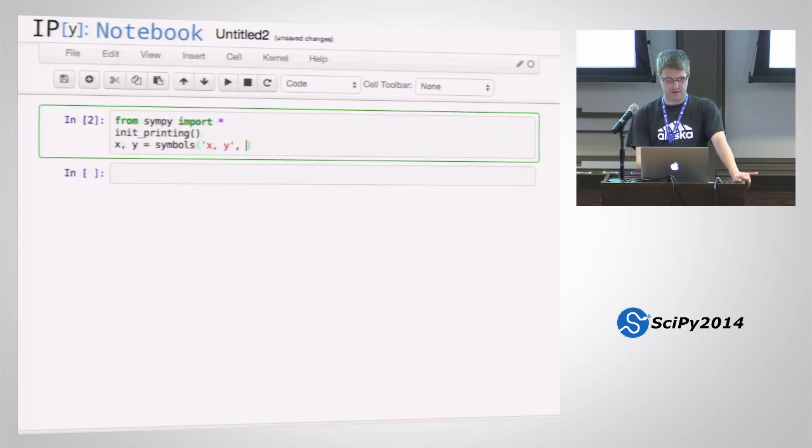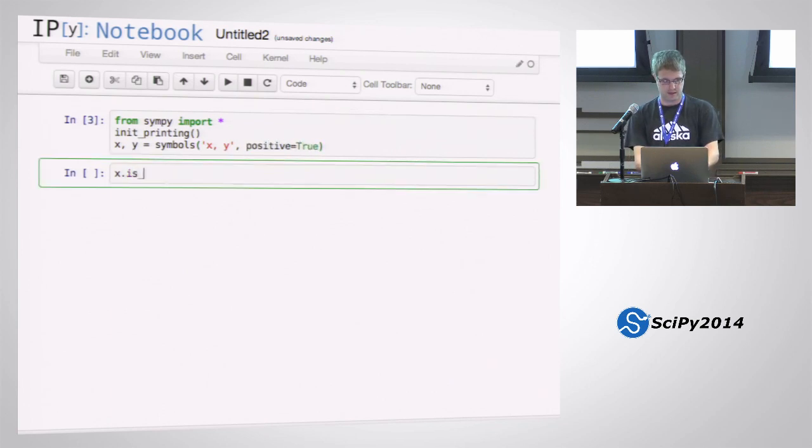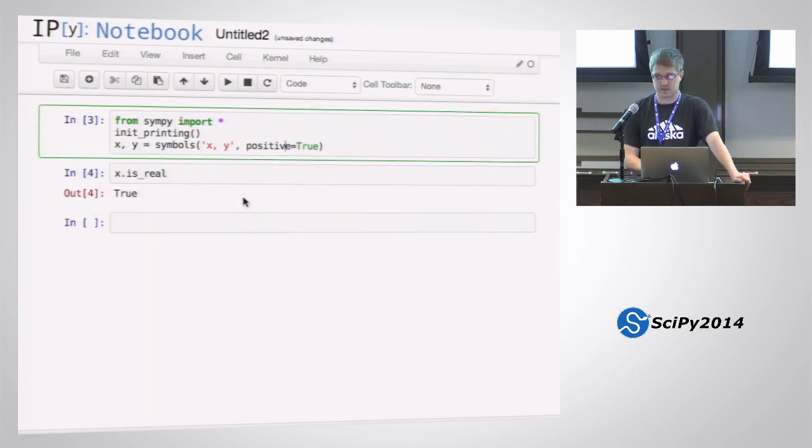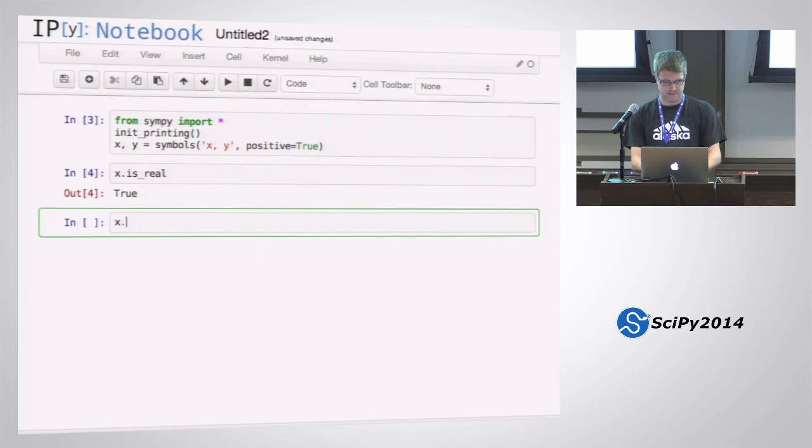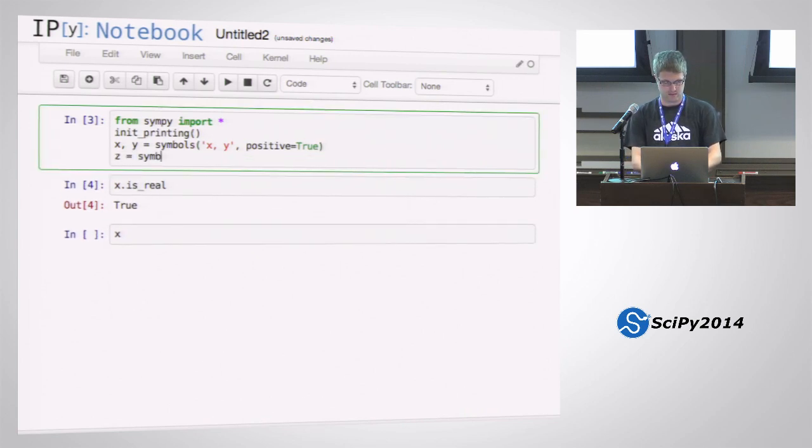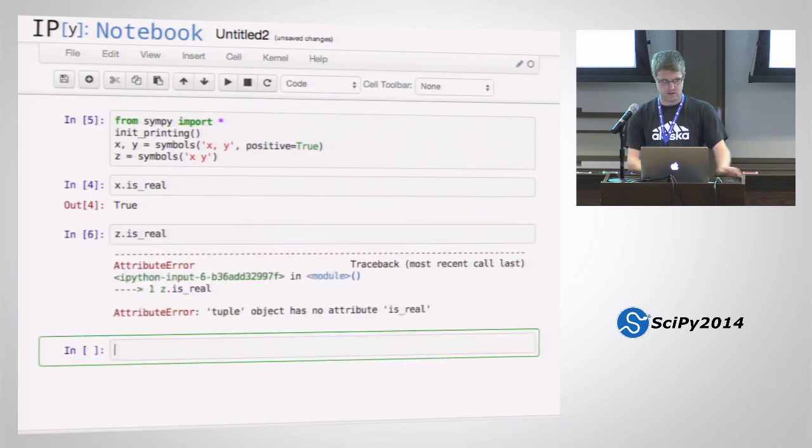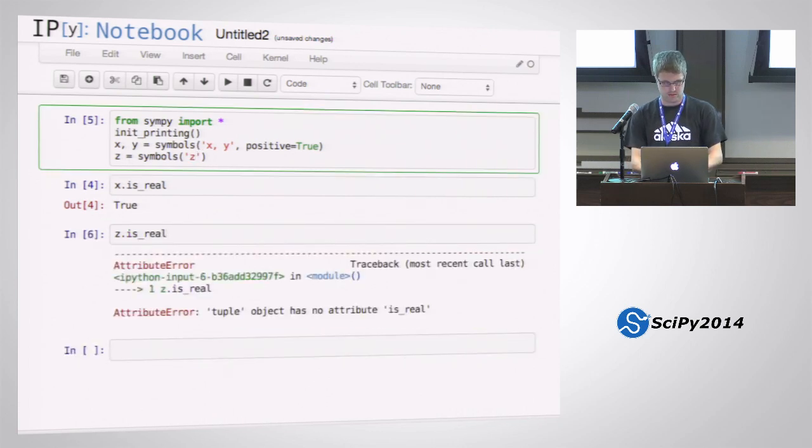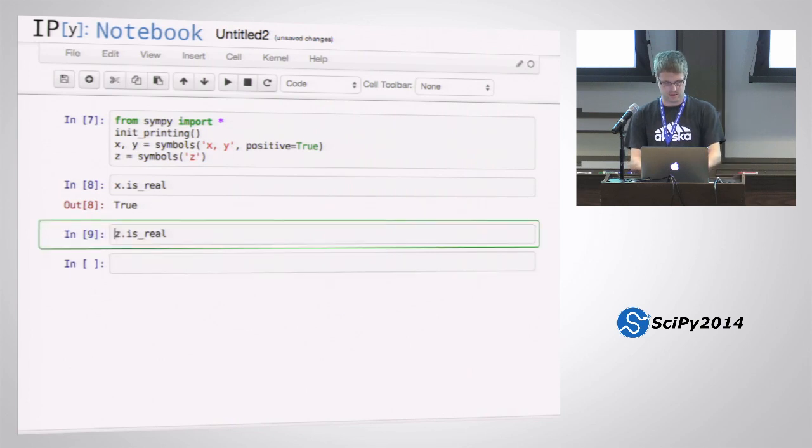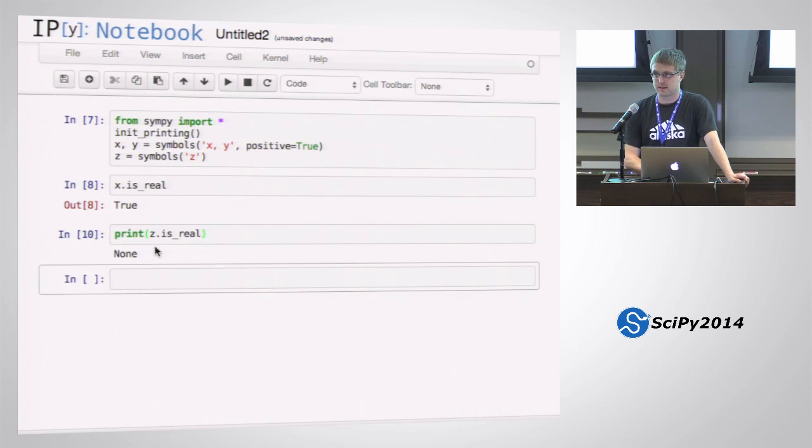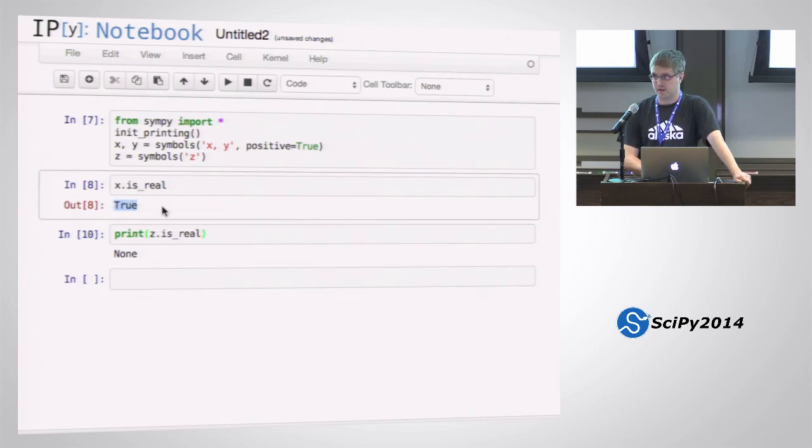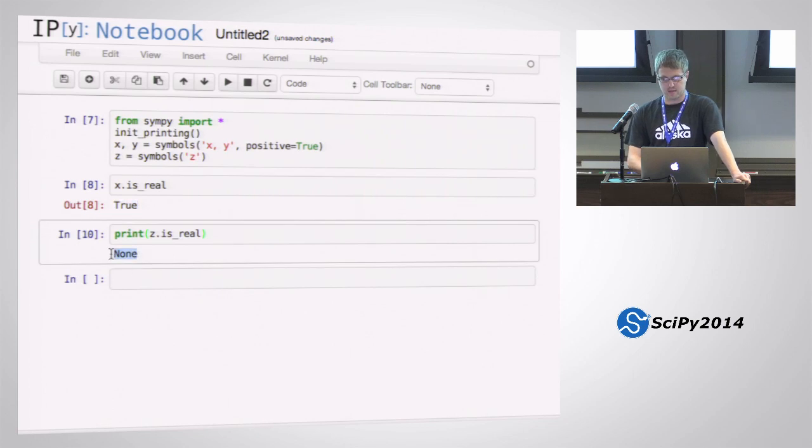So we mentioned earlier how to do assumptions. We can do, for example, make x and y, say real equals true, or let's do positive equals true. And then I can say x is real, yes, because anything that's positive is real. And say, let's say I make another one. Z equals, and I don't put any assumptions on it. Z is real. That should be a z there. And so what I got here was none. So the way the assumptions work is it's kind of a three-valued logic. If it knows that it's true, it'll give you true. If it knows that it's false, it'll give you false. And if it can't determine either way, it'll give you none.